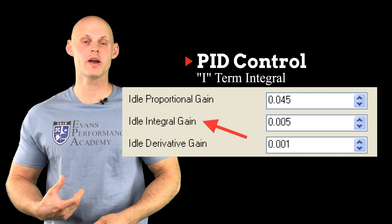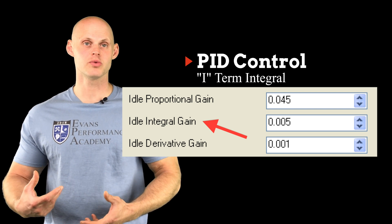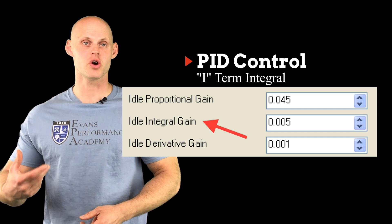Now, the integral term is simply going to be a way that we can correct our steady state error as we're running through whatever we're trying to control, as we're running to that target value.